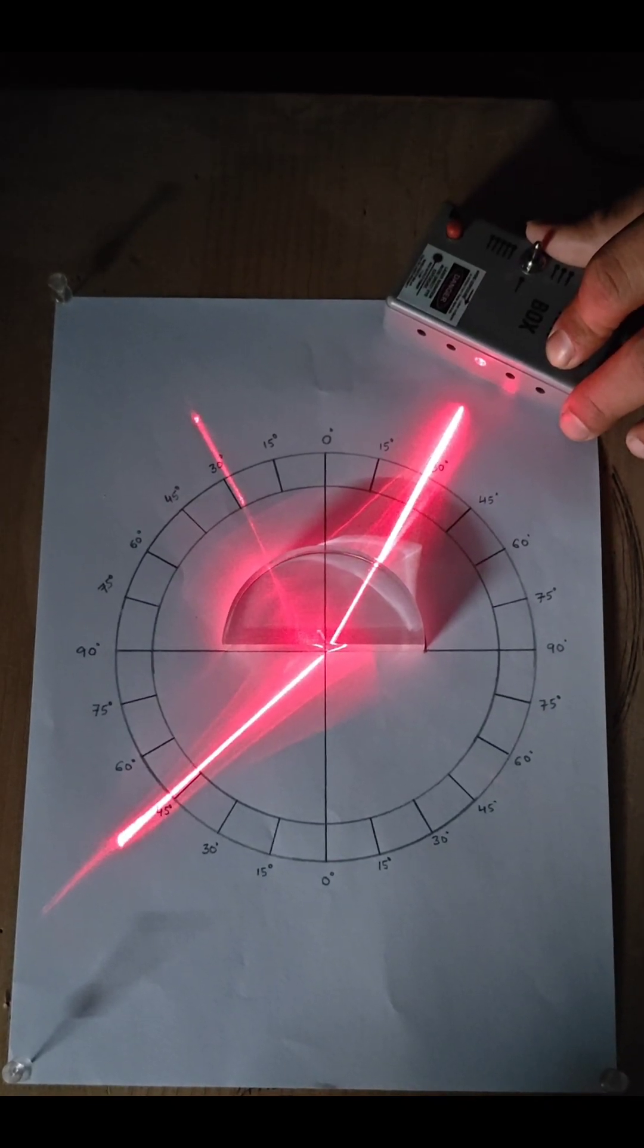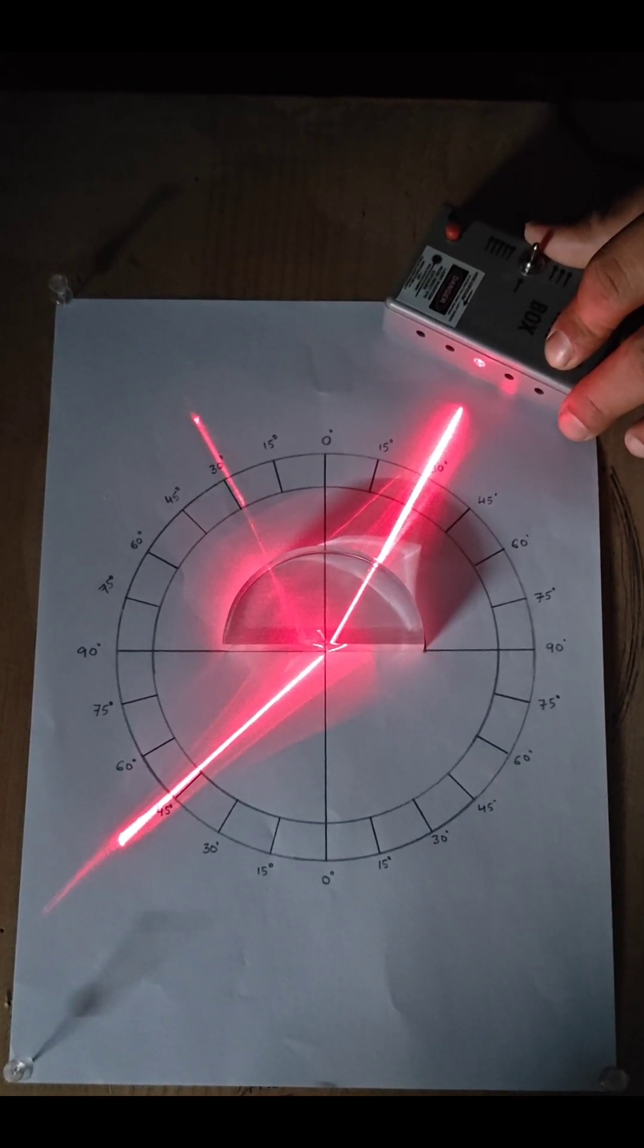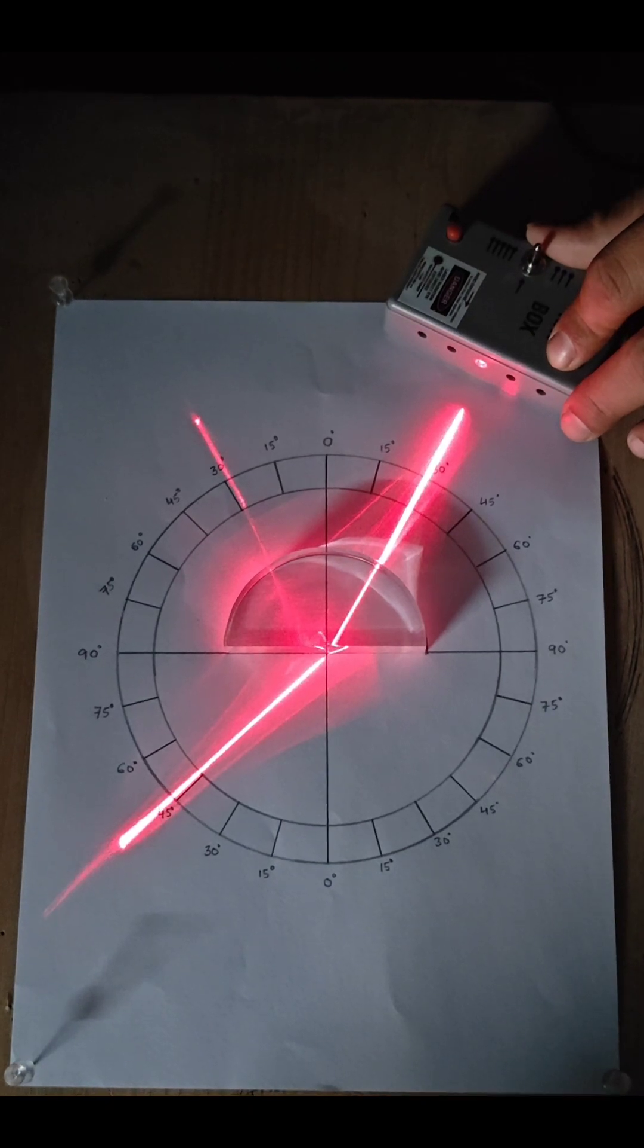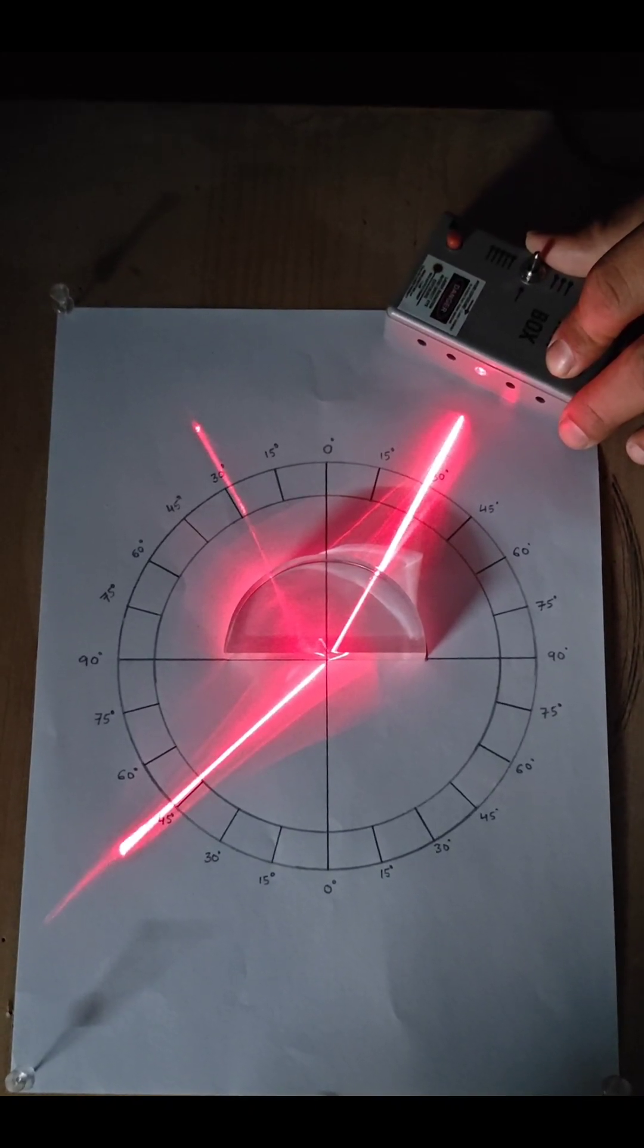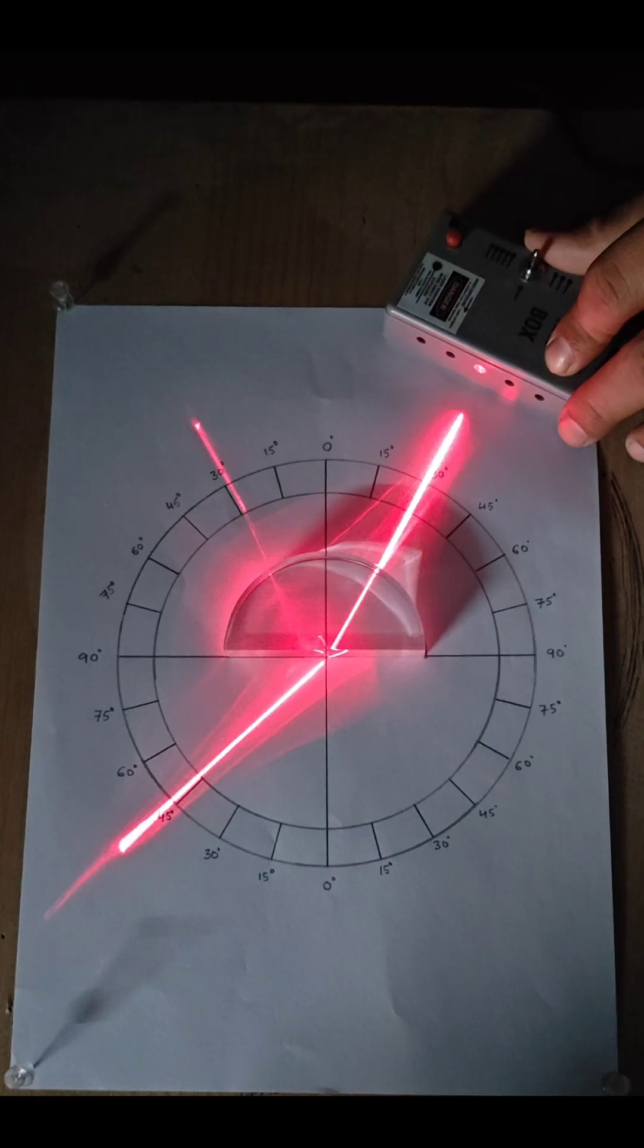So, we will use this to calculate the refractive index of the material of the glass slab. We can simply do sin i by sin r and using this, we can calculate the refractive index of the material of the glass slab.